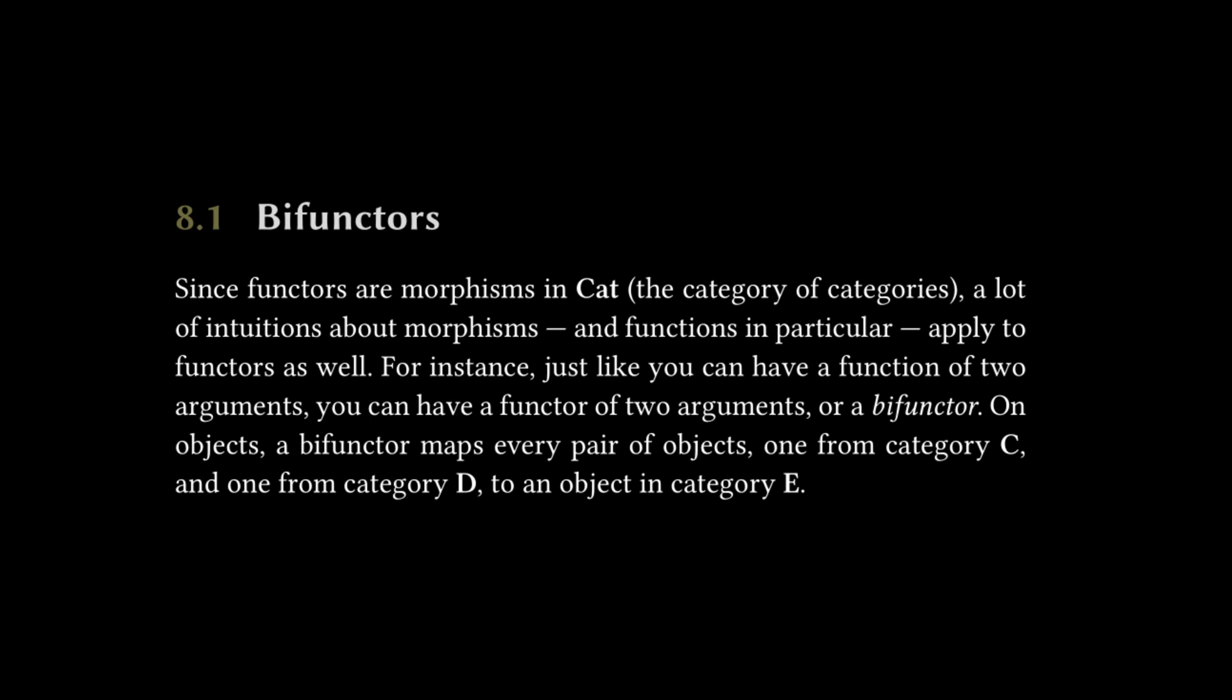On objects, a bifunctor maps every pair of objects, one from category C and one from category D to an object in category E.